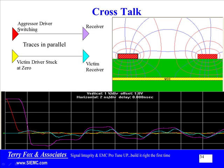One trace switches, the other doesn't switch, and whatever shows up on the victim is the crosstalk. Do I care about crosstalk everywhere along this line? No — I care about the crosstalk wherever my setup and hold sampling window is. If the sampling window is at a quiet point, that makes for less of a crosstalk problem than if the sampling window falls at a noisier region.